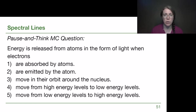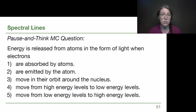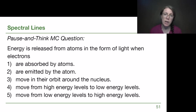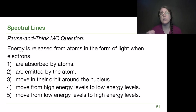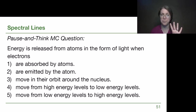As we think about these different terms — about things moving around and absorbing and emitting — let's make sure we feel confident with how these motions work. The question asks: energy is released from atoms in the form of light when electrons do what? If we go too fast we often pick option two, that they're emitted by the atom, because emission is what we're talking about — but it's the photons that are emitted, not the electrons. The electrons have to go from a higher energy level down to a lower energy level to release that extra energy as a photon. So it's option four.